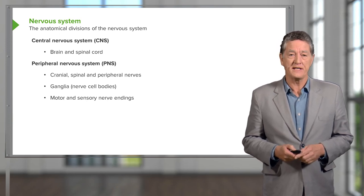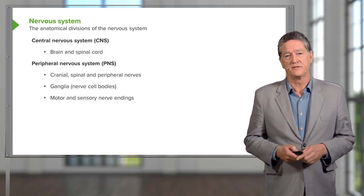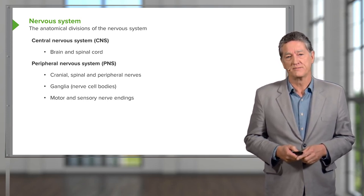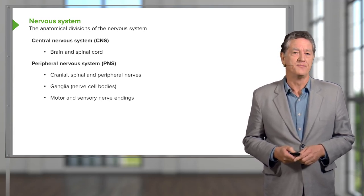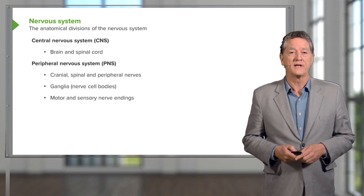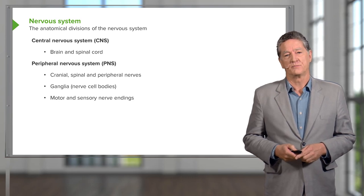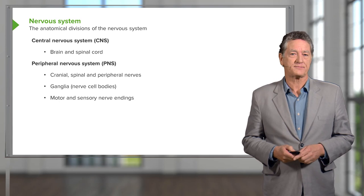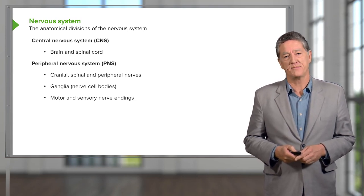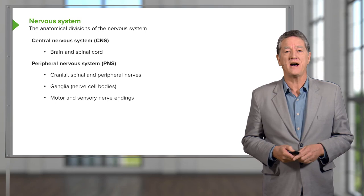Those spinal nerves can combine together and form a number of plexuses — for instance, the brachial plexus in the neck region that provides nerves supplying the upper limb. Some of those peripheral nerves can be named, such as the sciatic nerve in our lower limb, or the median, ulnar, and radial nerves in our upper limb.